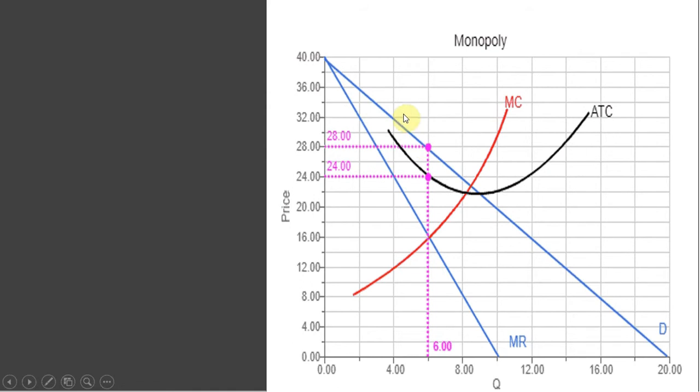Here we have a Monopoly firm. The Monopoly's demand curve slopes downward. The Monopoly faces the entire market demand curve, which slopes downwards.